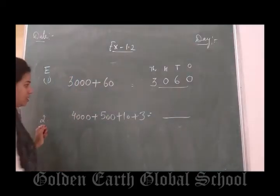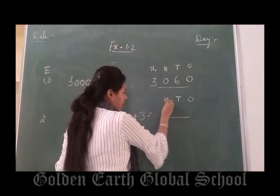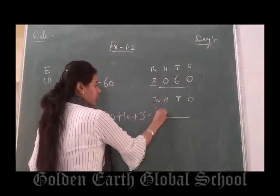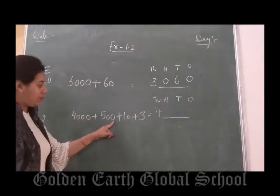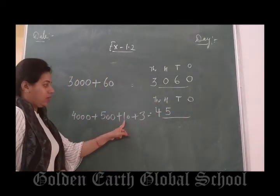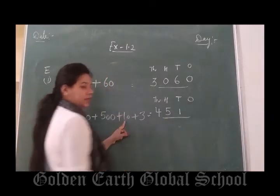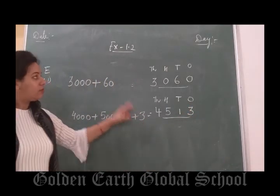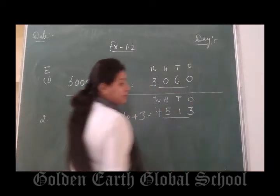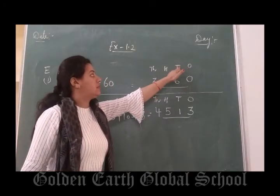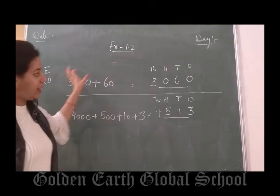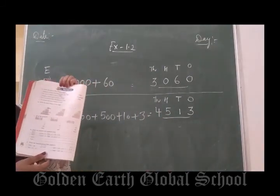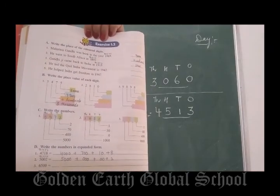Clear? Next example: first step — 1, 10, 100, 1000. Read the number: 4,000 — put 4 in the thousands place. 500 — put 5 in the hundreds place. 10 — put 1 in the tens place. 3 ones — put 3 in the ones place.